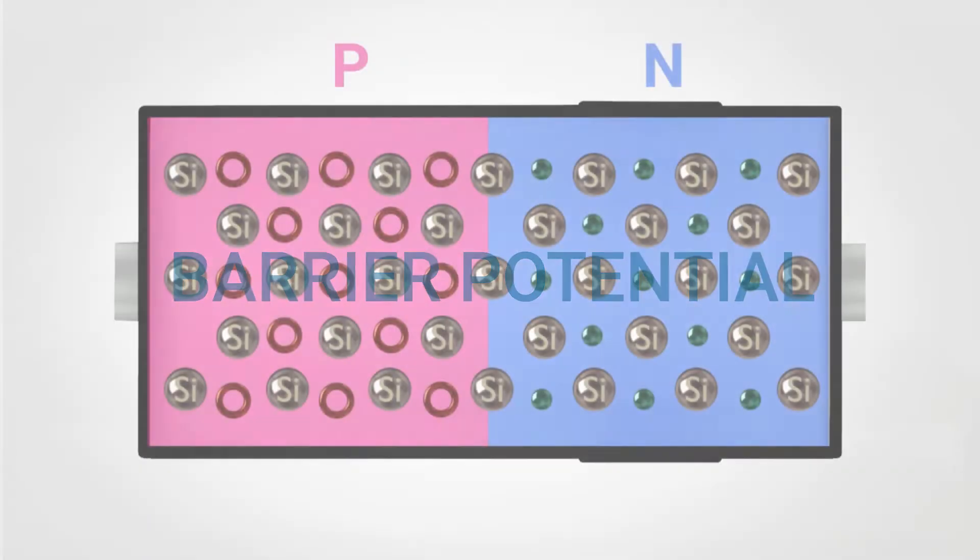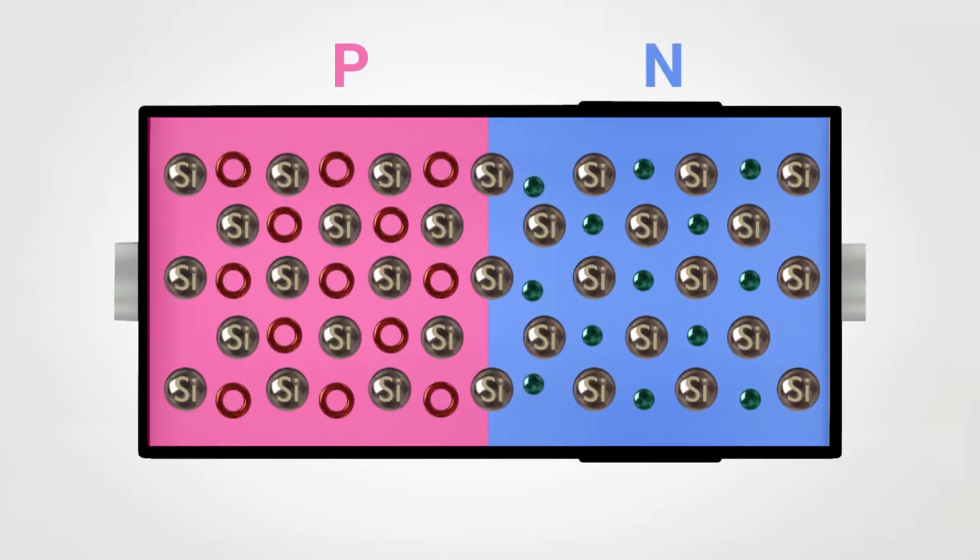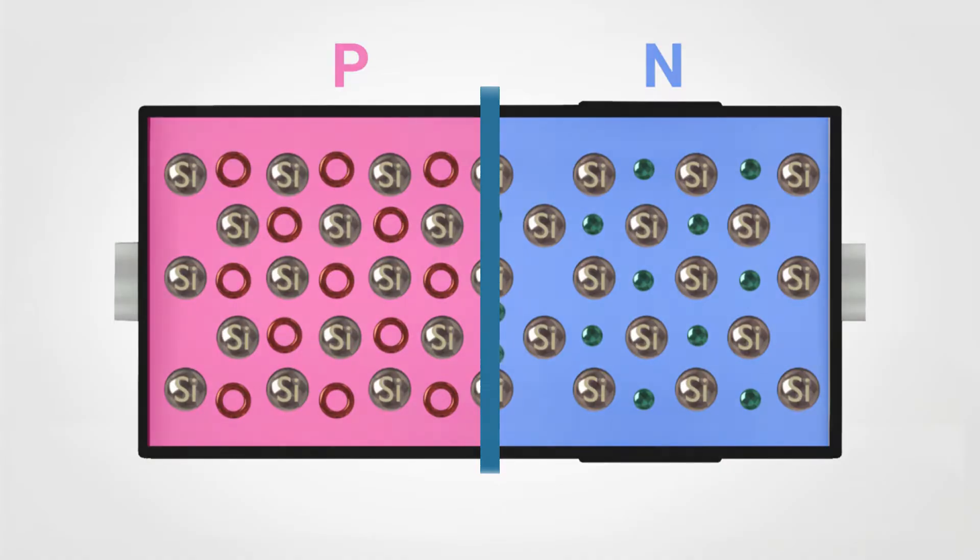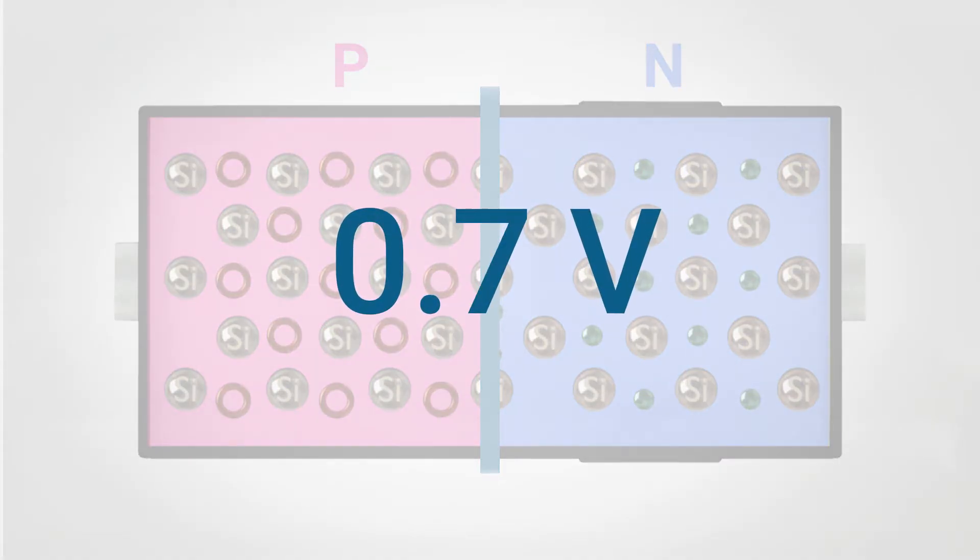The barrier potential is created when the electric field opposes a further migration of electrons from part N to part P. This phenomenon creates some sort of barrier against the flow of electrons. This barrier value is usually around 0.7 volts for silicon.